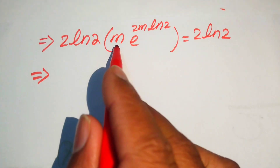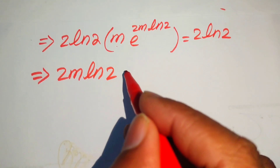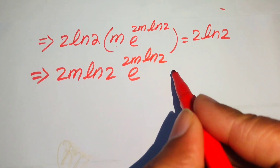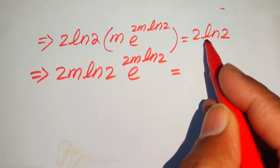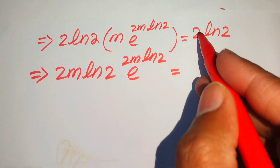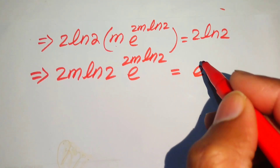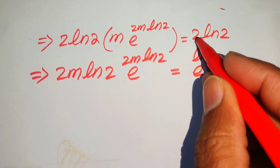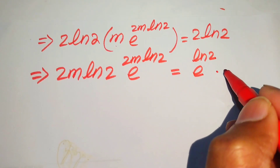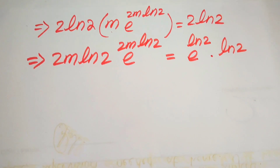Rearranging the left hand side, we write it as 2m·log 2 times e to the power of 2m·log 2. For the right hand side, we convert the 2 into e to the power of log(log 2), so that e^(log(log 2)) cancels to give 2, and the right hand side becomes e to the power of log 2 times log 2. Now both sides are in standard Lambert W form.